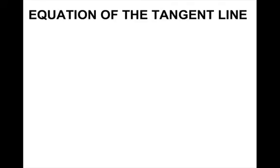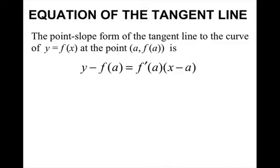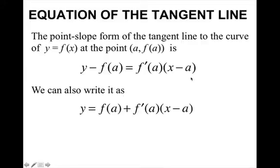So the equation of the tangent line. We know that the point-slope form of the tangent line to the curve y equals f of x at the point (a, f(a)) is y minus f(a) equals f prime of a — the slope of the tangent line — times x minus a. We can also write it as y equals f(a) plus f prime of a times x minus a.